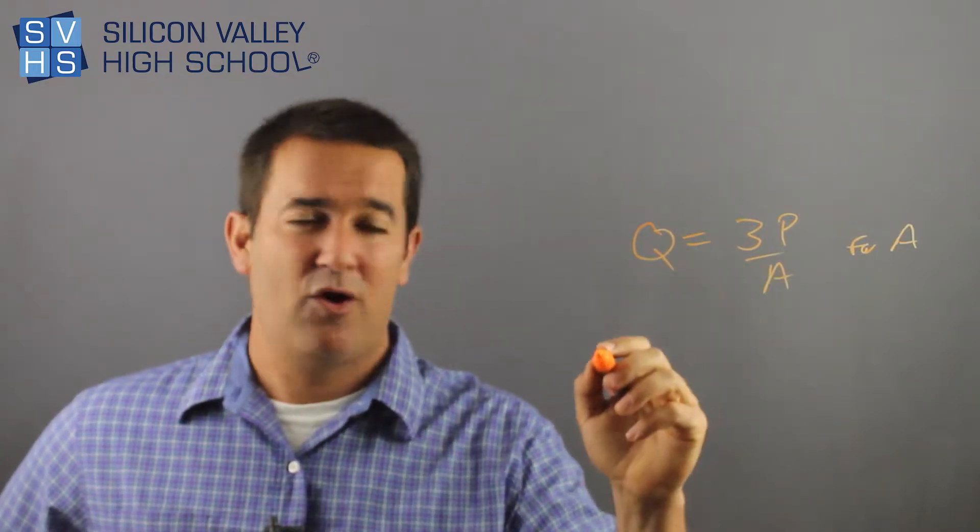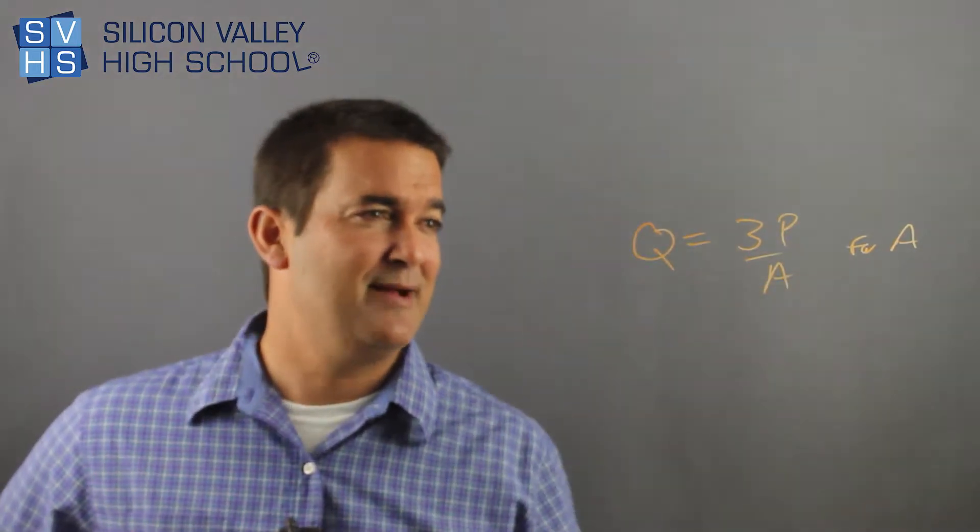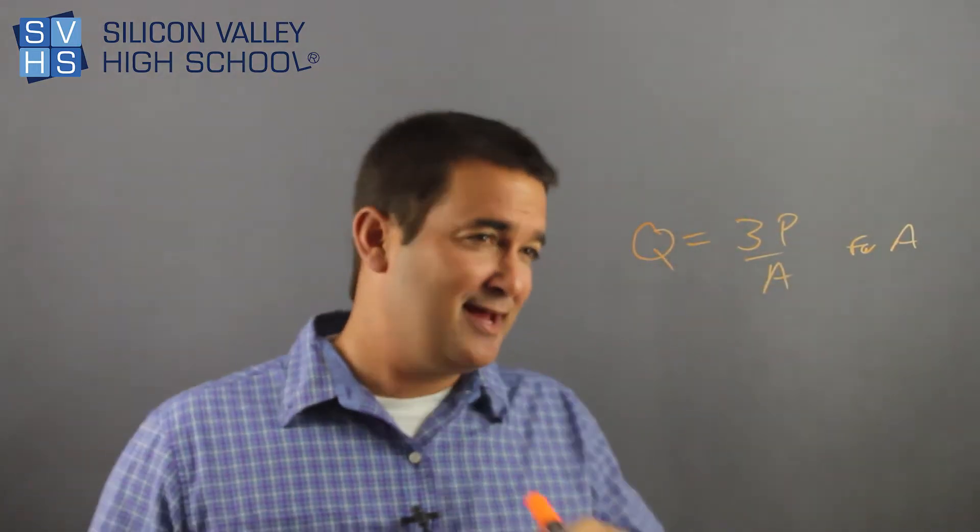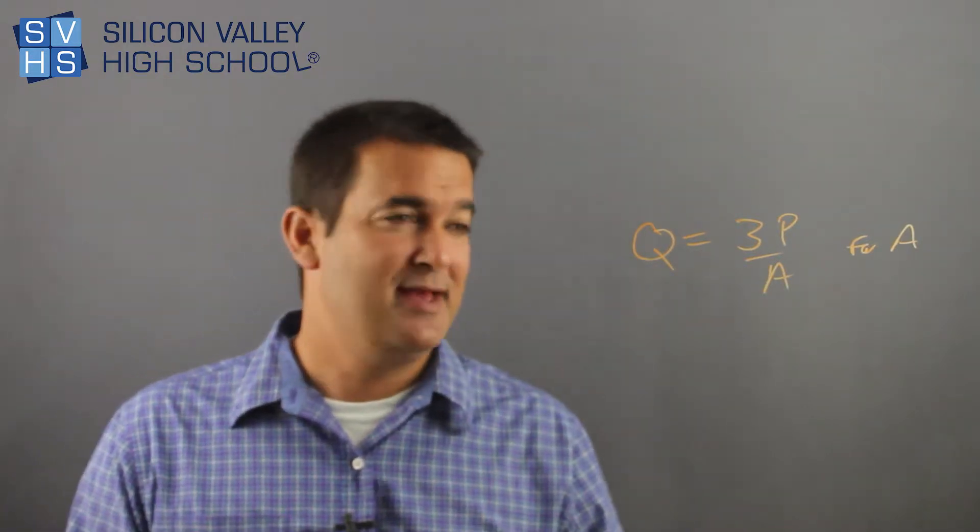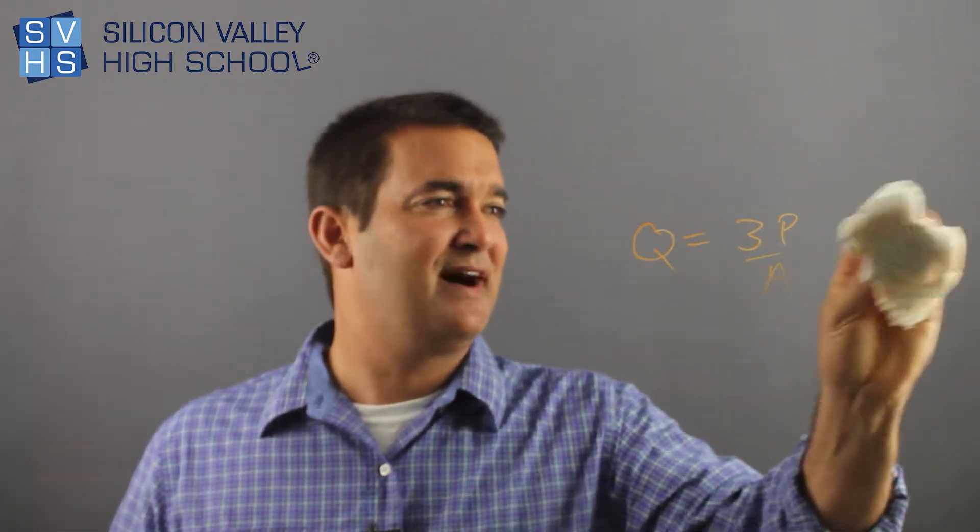One way is to picture this Q as being over 1 and then cross-multiply. I think it's simpler to say, I don't want A in the bottom. And so really, 3P is being divided by A.